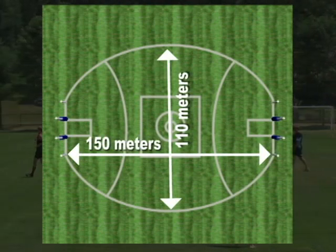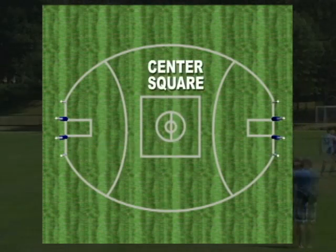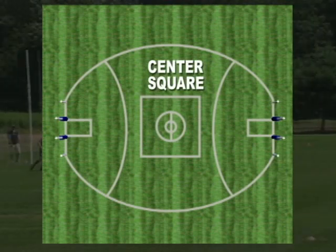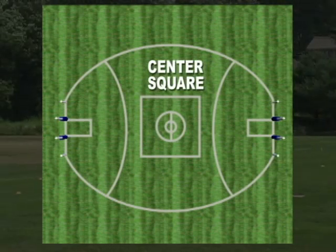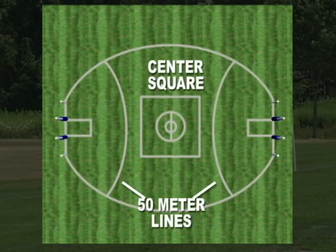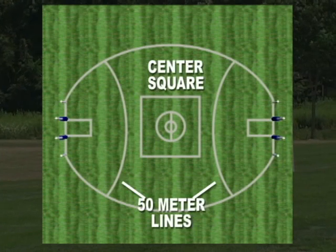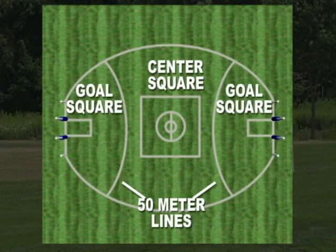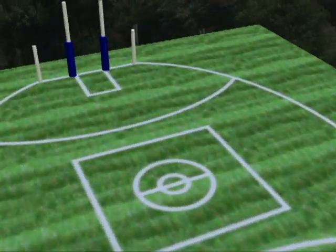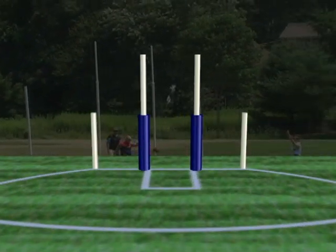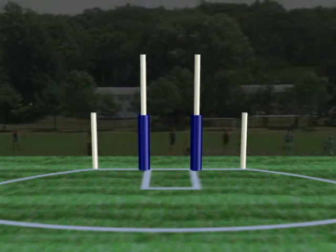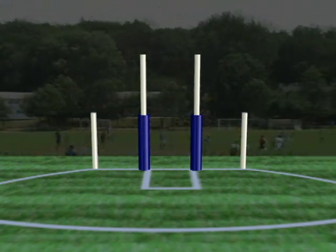There are only a few markings on the field. There's the center square, in which the opening contest for possession takes place. The center square is flanked by two long arcs, known as the 50-meter lines, there to indicate the distance from the goal. Then there are the goal squares, which extend out from between the goal posts at each end. At both ends of the field, there is a set of four posts.